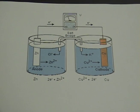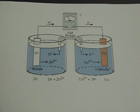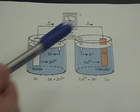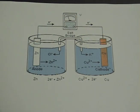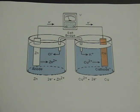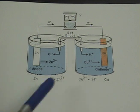What happens is that the oxidizing metal — in this case zinc — transfers its electrons through the wire into the reducing metal — in this case copper. We call the chamber that has the oxidizing metal the anode.